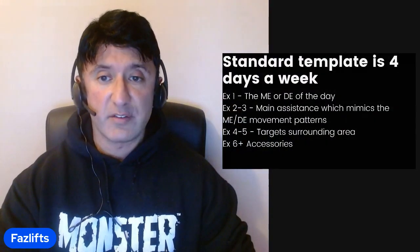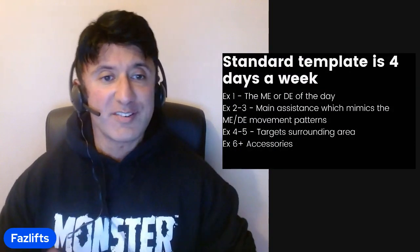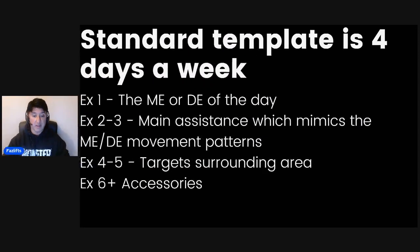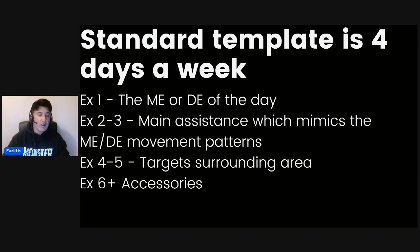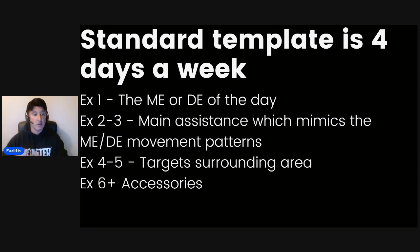Going straight into this — your standard template is a four-day-a-week thing, at least that's where it starts. You can progress that with additional sessions for weak points if you want. The general outline is a maximum effort lower day, a dynamic lower day, a maximum effort bench day, and a dynamic effort bench day. The first exercise is normally the maximum effort or dynamic effort of the day — a bench variation, a squat or deadlift variation, or the actual lifts done for speed work.